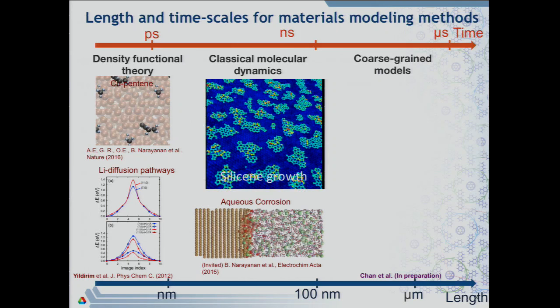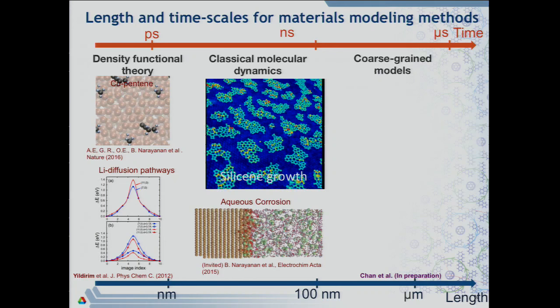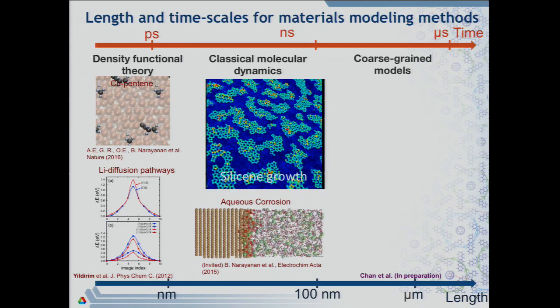For aqueous corrosion, where green-colored atoms are chloride ions attacking an oxide layer, you can understand how degradation of metals or metal oxides takes place in a corrosive environment. The underlying reaction and dissolution of metals can be studied using reactive molecular dynamics, where you model bond formation and bond breakage phenomena within the classical MD framework — still accessible at nanometer length scales.